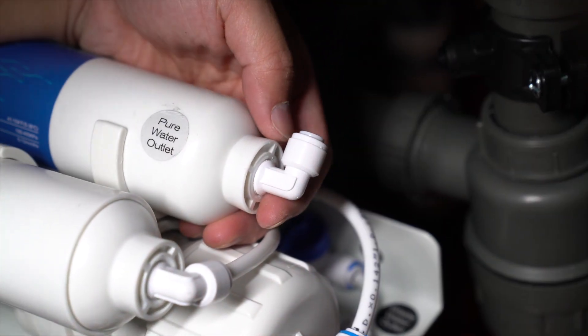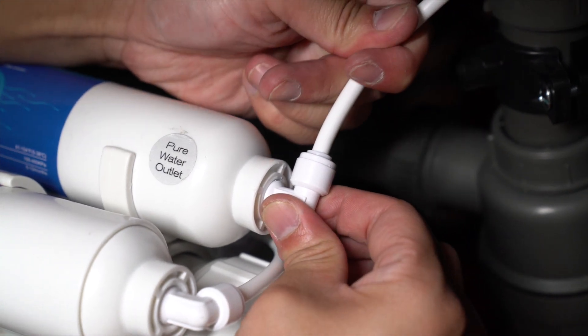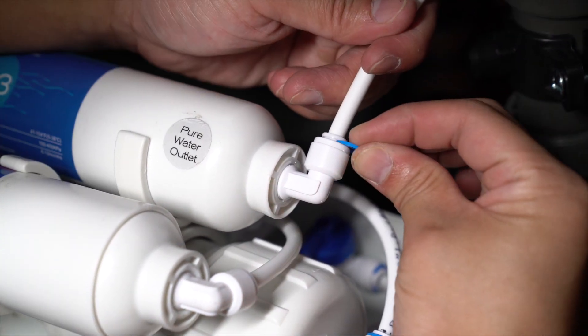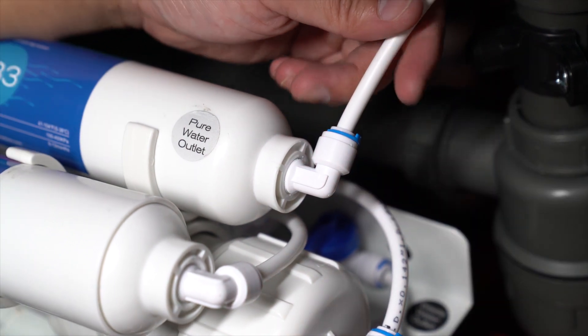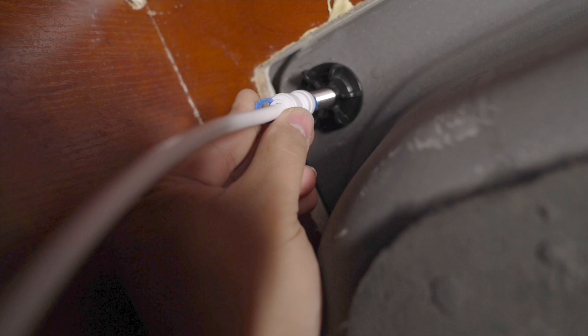Then, pull out the white plug and insert the white PE tube. Lock it with the blue locking clip. Now, insert the other side of the white tube into the faucet end and lock it with the blue locking clip.